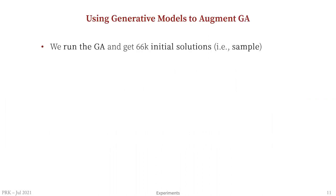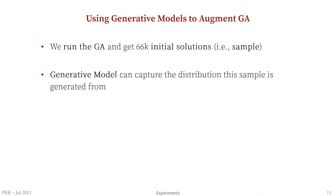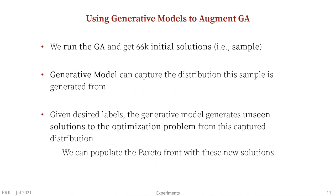Here's how it's done. We run the GA and get 66,000 initial high-quality solutions for this optimization problem. We train the generative model on these solutions and let it capture the underlying data distribution. Given desired labels, we let the generative model generate unseen solutions to the optimization problem from this learned distribution.